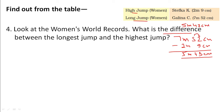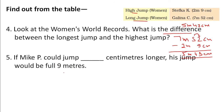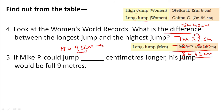Remember: subtract meters from meters and centimeters from centimeters. If Mike P could jump a few more centimeters, his jump would be 9 meters. He currently jumps 8 meters 95 centimeters. He needs 5 more centimeters — because 95 plus 5 equals 100 centimeters, which equals 1 meter, so 8 plus 1 equals 9 meters. Answer: 5 more centimeters.